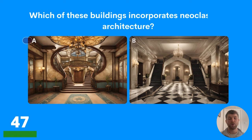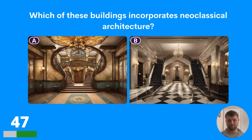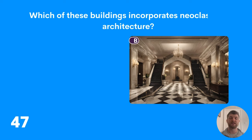Question forty-seven: which of these buildings incorporates neoclassical architecture? Is it A or B? The answer is B.